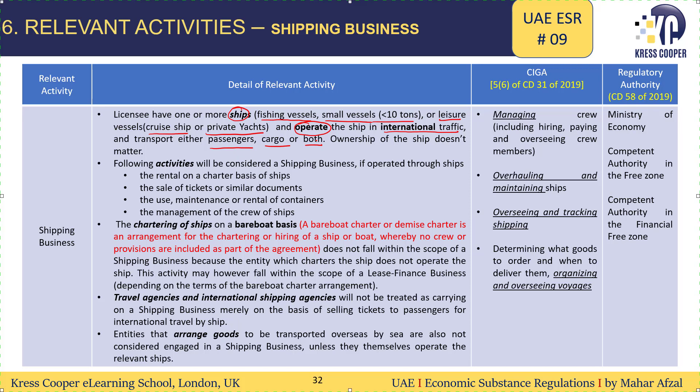In the shipping business, it doesn't matter who is the owner of the ship — we need to look at who is operating the ship. If someone is operating the ship and these ships are being used in international traffic, then it will be subject to ESR. The following activities will be considered as a shipping business: rental or charter of ships, sale of tickets, use, maintenance or rental of containers, and management of the crew of the ship — provided that these activities are being carried out by the same party who is operating the ships.